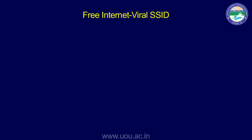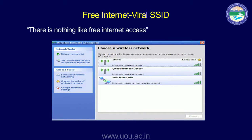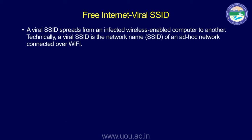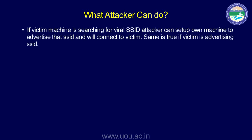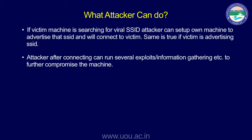The viral SSID declares itself as 'free internet,' but there is no real free internet. The viral SSID spreads from one infected wireless-enabled computer to another. If a victim machine is searching for a viral SSID, the attacker can set up their own machine to advertise that SSID — similar to a honeypot or evil twin attack — and then listen to all communication and potentially control your machine.